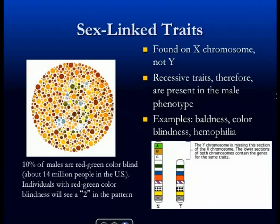Those are what are called sex-linked traits, and they don't follow a Mendelian pattern either, because they will frequently — at least as they appear to us in the phenotype — skip a generation. People always say baldness skips a generation. Well, that's because the mother is a carrier and she doesn't have baldness, but her sons do have baldness. So it appears to skip a generation, but that's because it's a sex-linked trait.